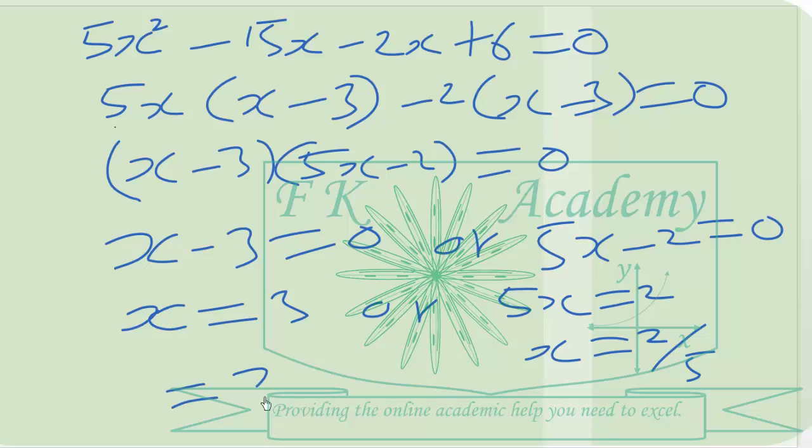Because when we subtract 1 from 3 we still get 2, and when we subtract 1 from 2 over 5 we get a negative value. Therefore it takes the apprentice 3 hours to complete the painting.